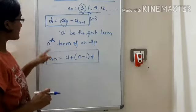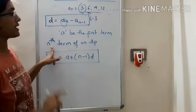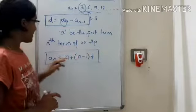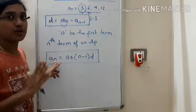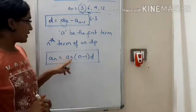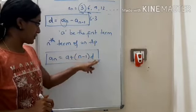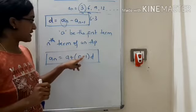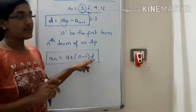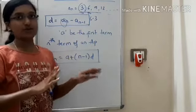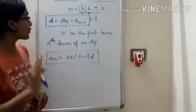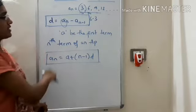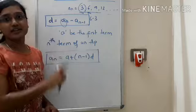Here is another important formula: the nth term of an arithmetic progression. aₙ is equal to a plus (n minus 1) into d, where 'a' is the first term, 'n' is the position of the term you want to find, and 'd' is the common difference. Make a screenshot of these two formulas or write them in your notebook.